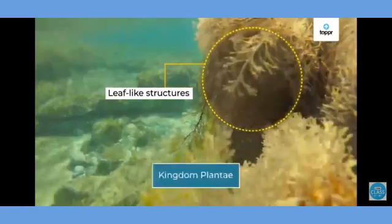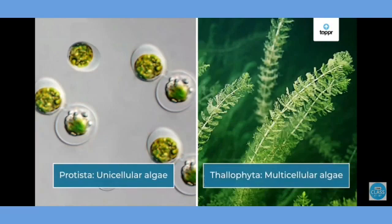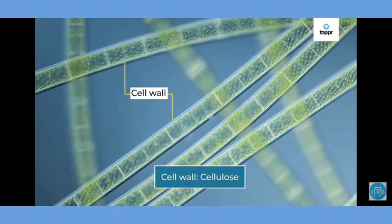Thallophyta belong to Kingdom Plantae. They have leaf-like structures but proper roots, stems, and leaves are not present. They are thallophytes — multicellular organisms, which differentiates them from unicellular organisms in Protista. They have a cell wall and are made up of cellulose, as you can see with Spirogyra here.